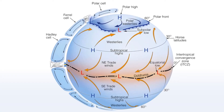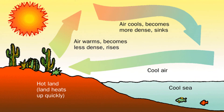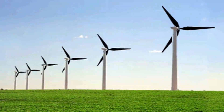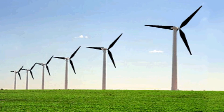Air pressure is the weight of air as experienced from all directions on land. When air heats up, it rises and creates an area of low pressure on the earth's surface. The surrounding cool air moves in to replace this rising air, coming from areas where the pressure is high. This movement of air from a high pressure area to a low pressure area is called wind.